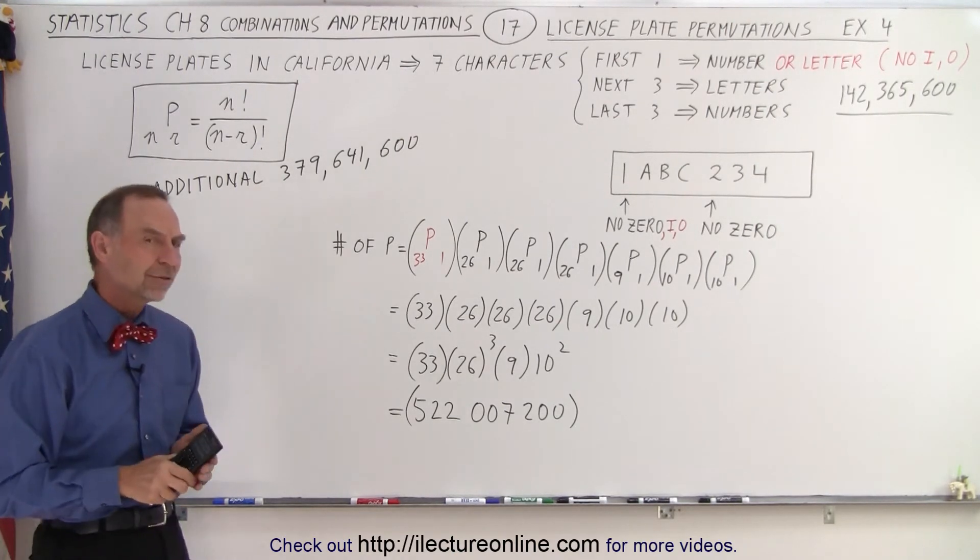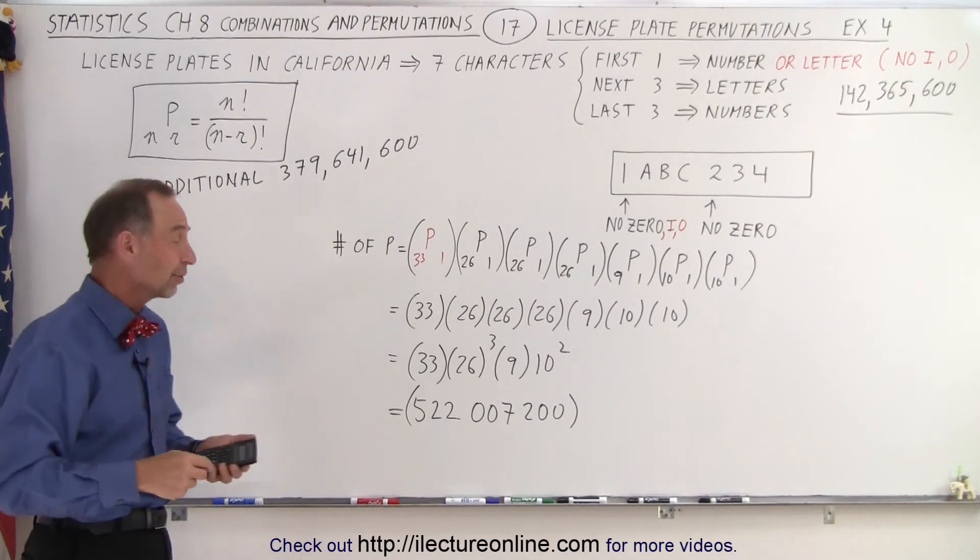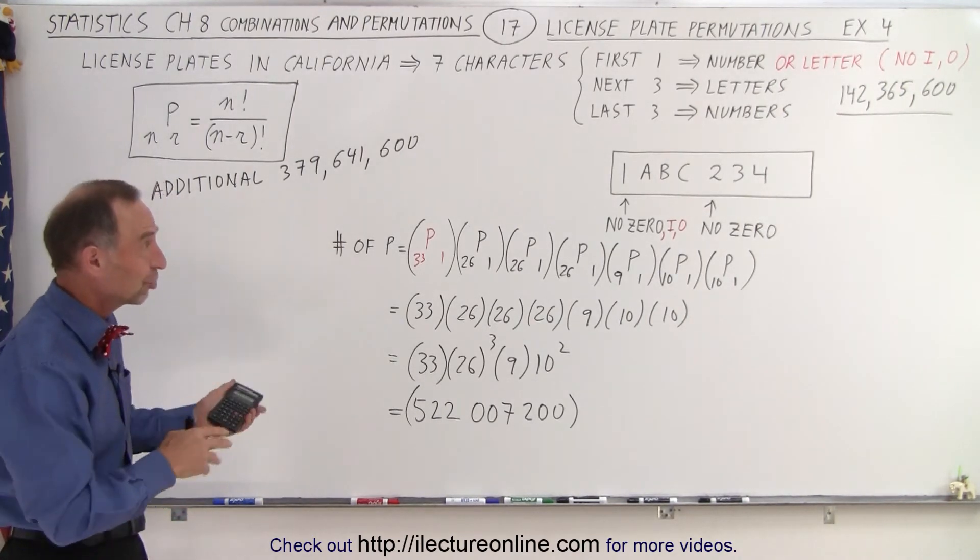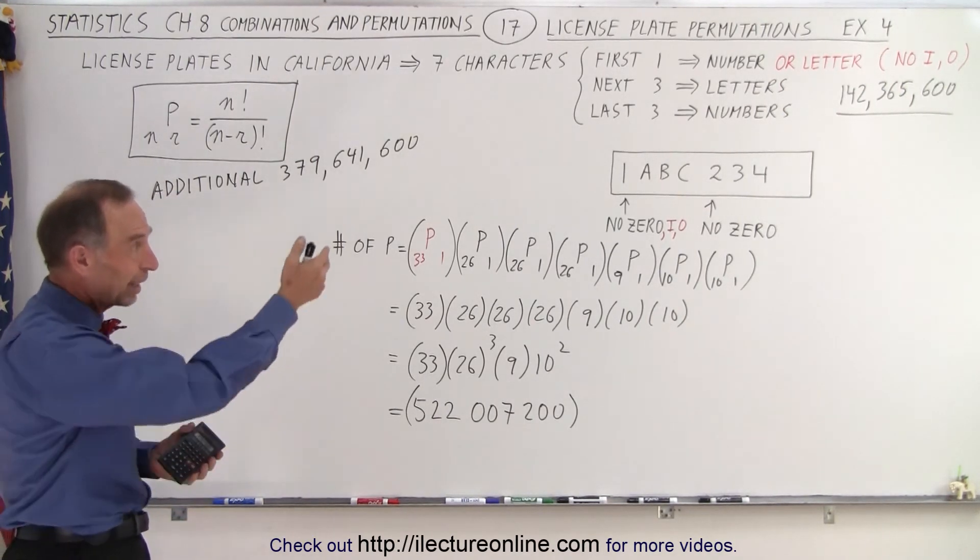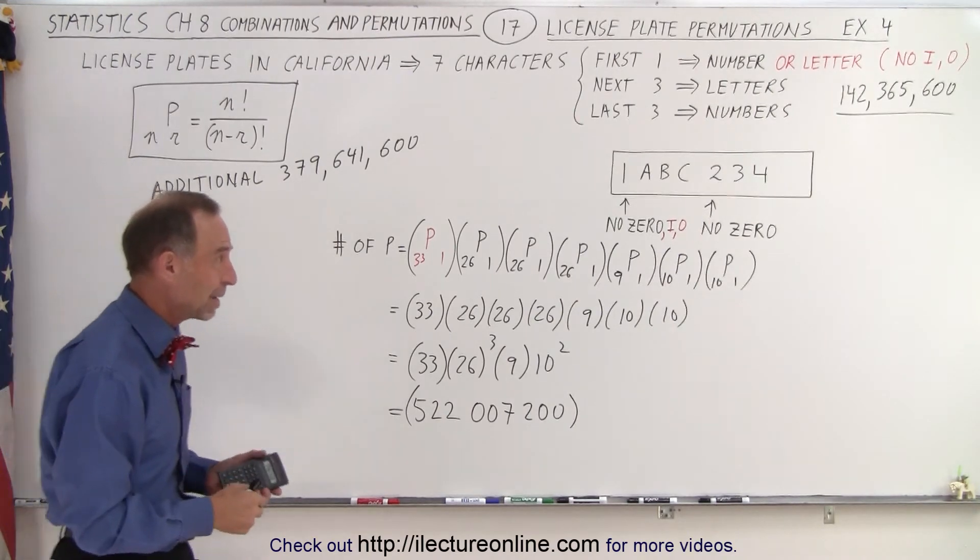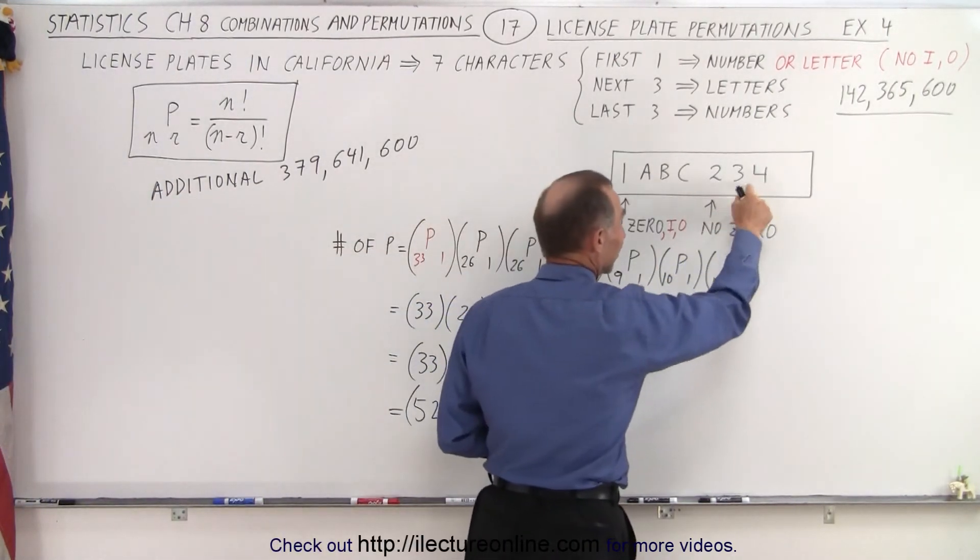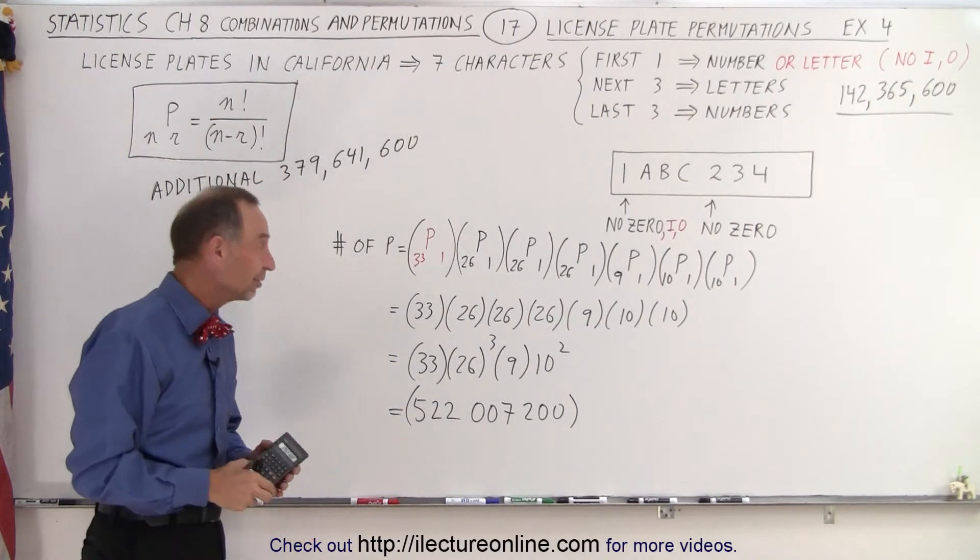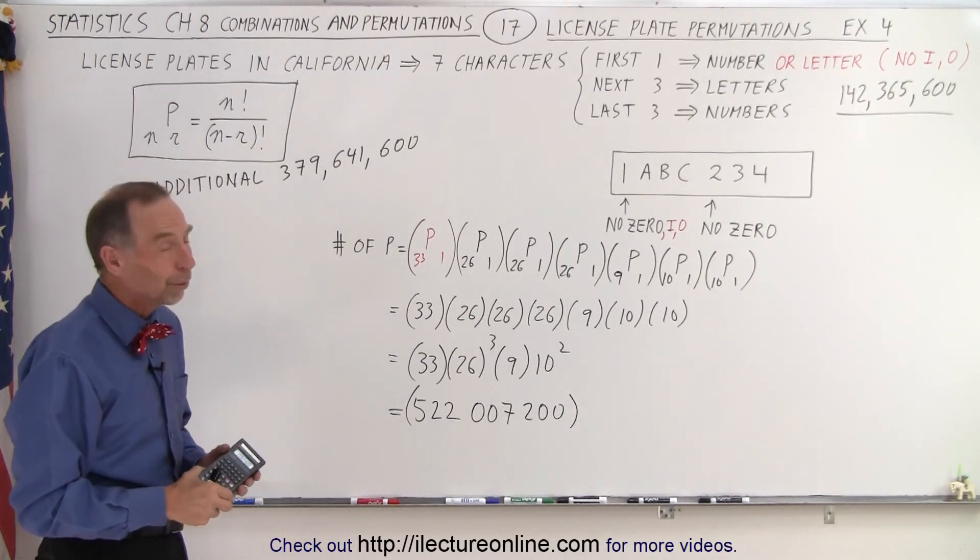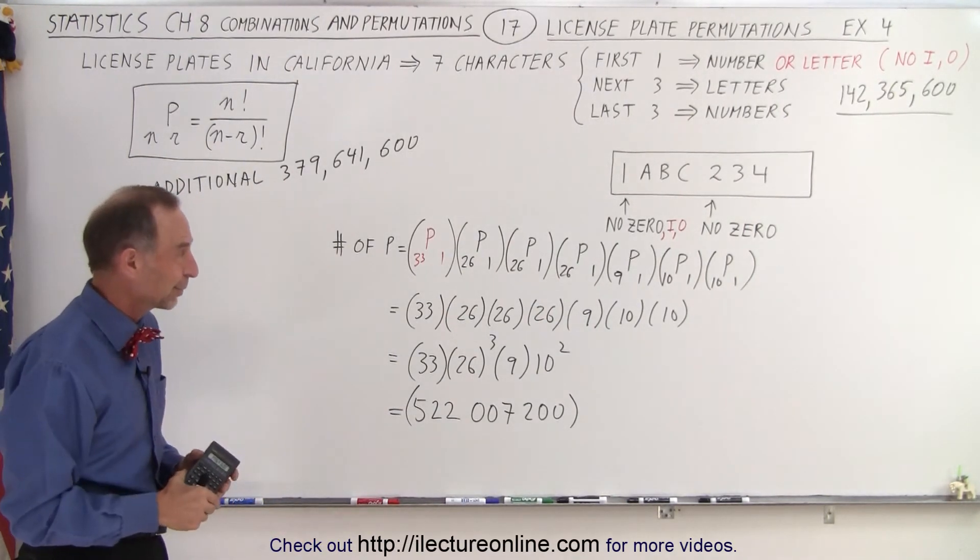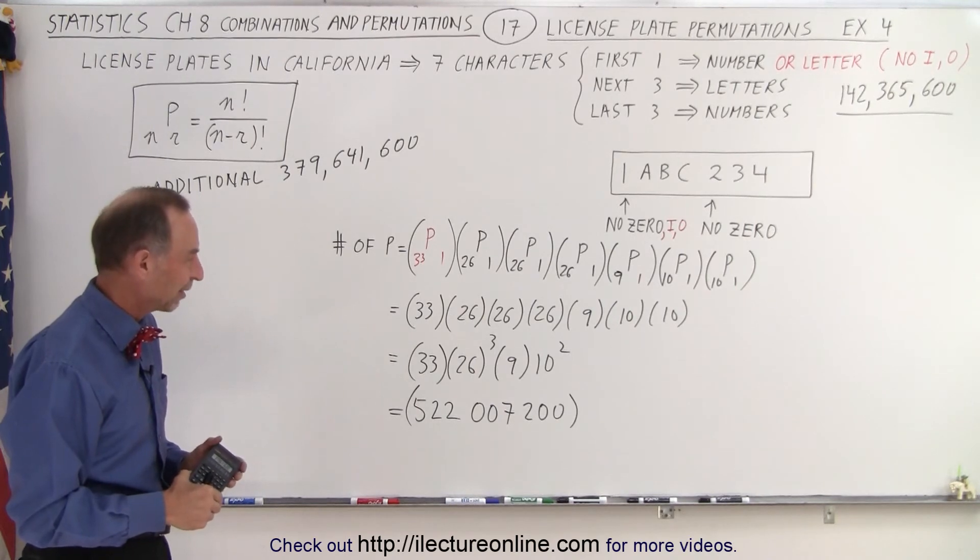So that should probably last us for another 30 or 40 years in California until they have to make another change. Maybe more letters in the back instead of numbers. Maybe we'll make the last character a number that would add another whole bunch of permutations, or maybe we'll go to an 8 character. We'll see what happens when we get that far.